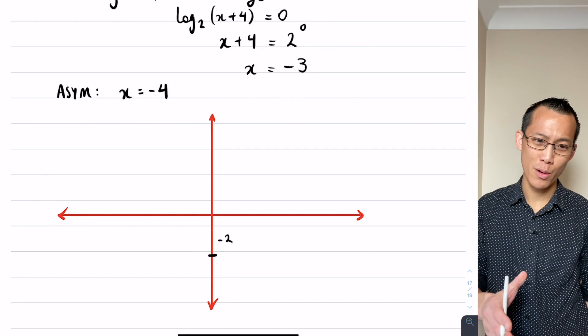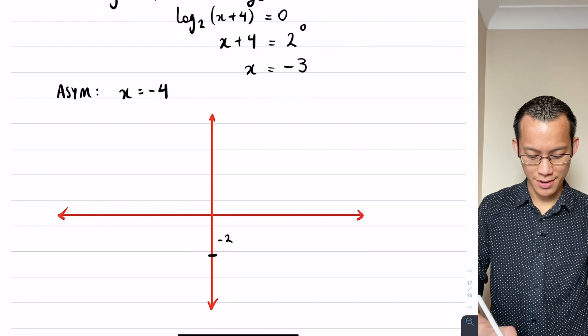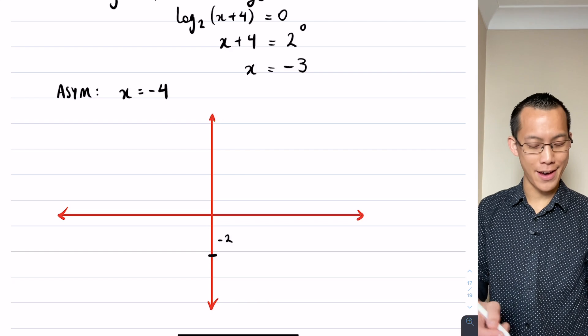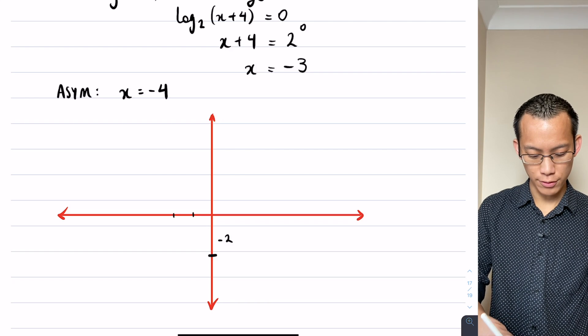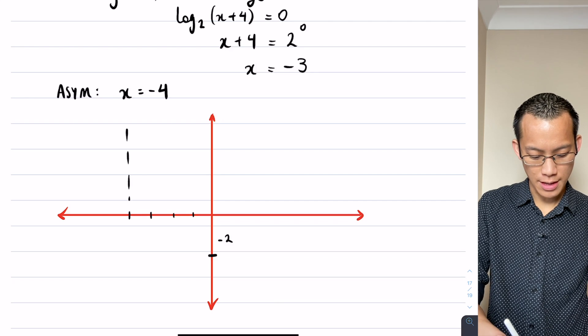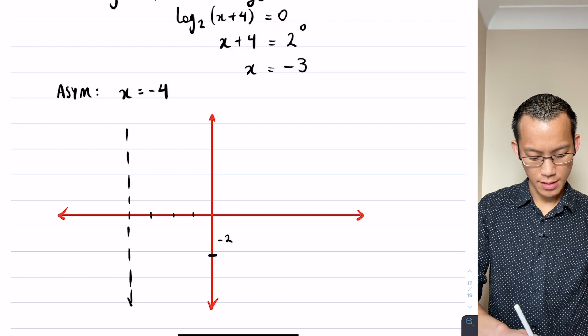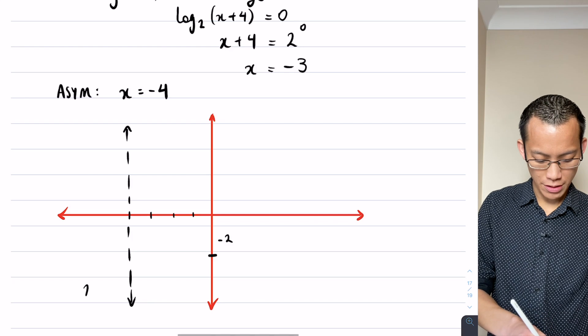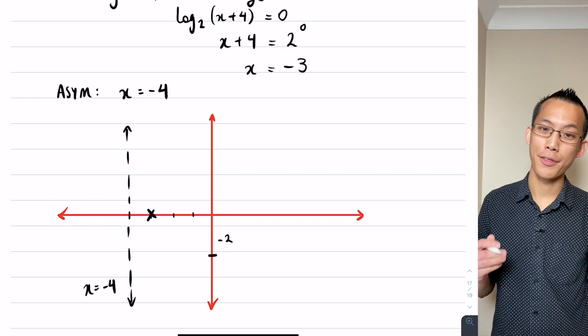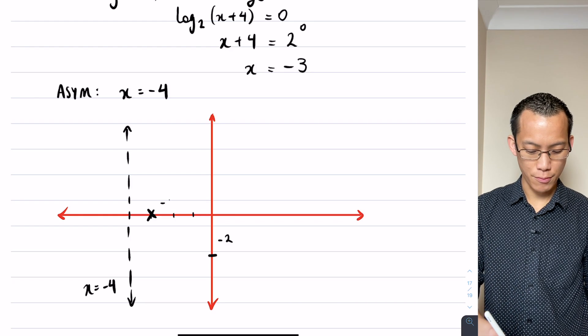I'm going to get my x-intercept and also my vertical asymptote - they're going to kind of come in place next to each other. So they're both at negative value, so I'm going to go negative 1, negative 2, negative 3, negative 4. So negative 4, that's where I'm going to line up my asymptote like so - please remember always to label it x equals negative 4. And then x equals negative 3, that's going to be my intercept right there.